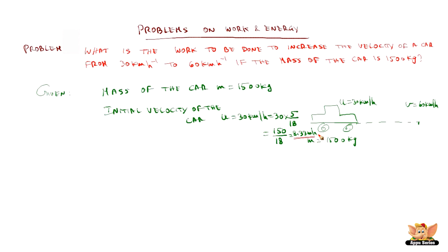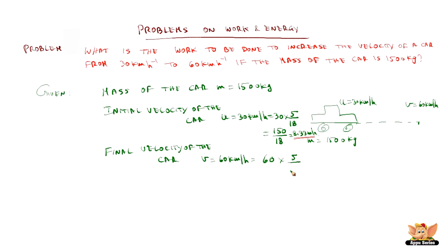Now, in the same way, the final velocity of the car, v, is 60 km per hour. Converting into meters per second, we multiply by 5 by 18: 60 into 5 by 18, which gives 16.67 meters per second.